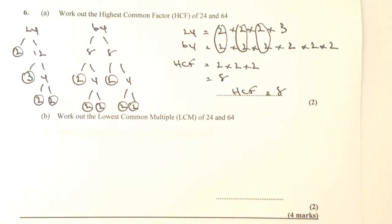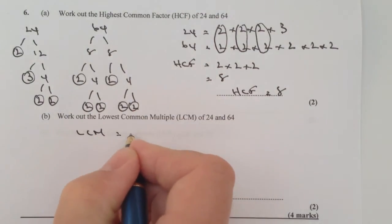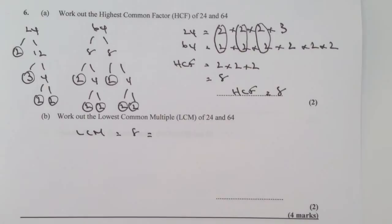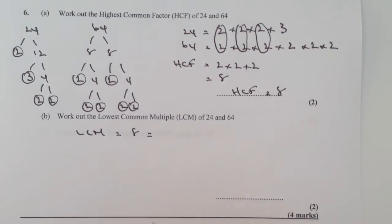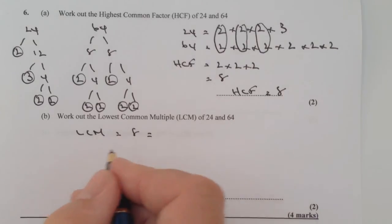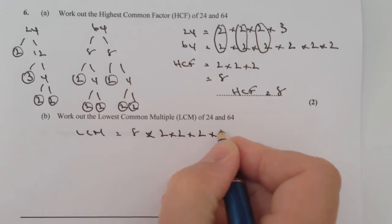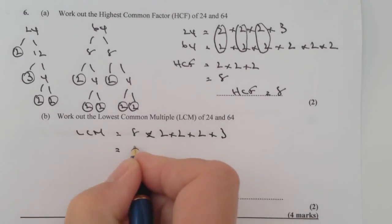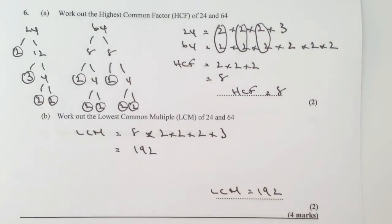On to part two: the LCM of 64 and 24. The LCM equals the HCF multiplied by what's left. We have three more 2s from 64 and a 3 from 24 remaining, so the LCM equals 8 times 2 times 2 times 2 times 3, which works out to 192.